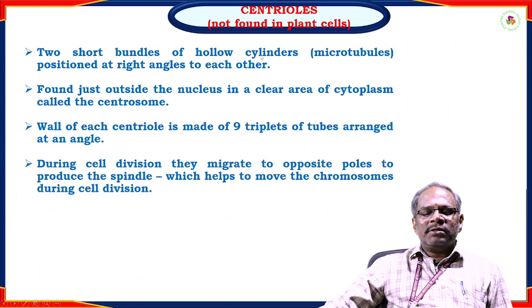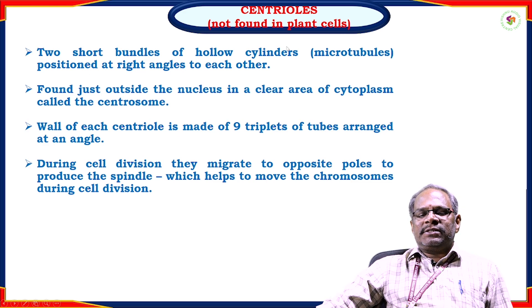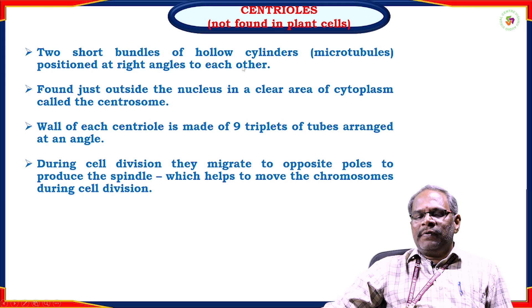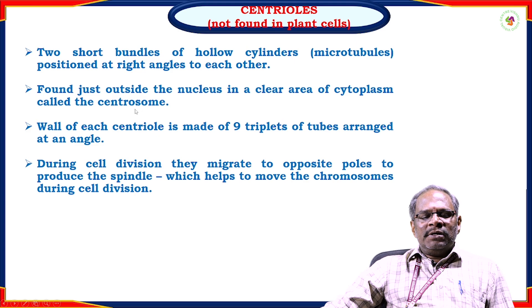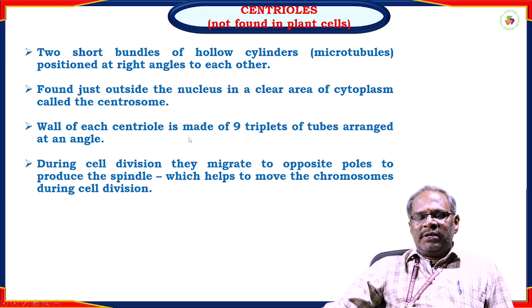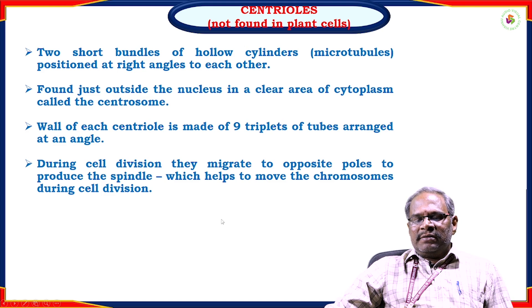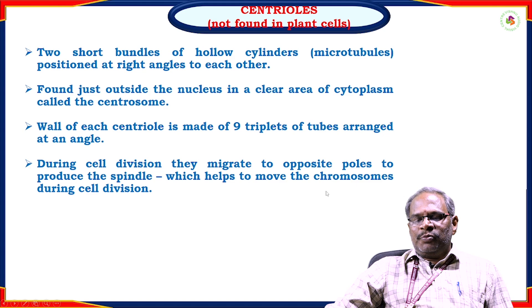Centrioles are not found in plant cells; they are only present in animal cells. They consist of two short bundles of hollow cylinders with microtubules positioned at right angles to each other. They are found just outside the nucleus in a clear area of cytoplasm called the centrosome. The wall of each centriole is made of 9 triplets of tubules arranged at an angle. During cell division, they move to opposite poles to produce the spindle, which helps move chromosomes during cell division.